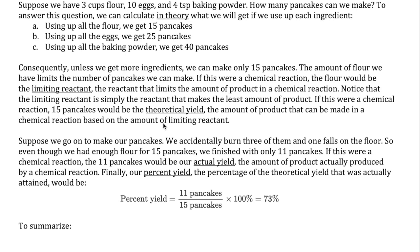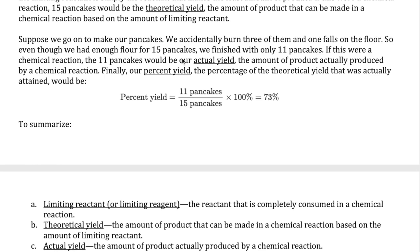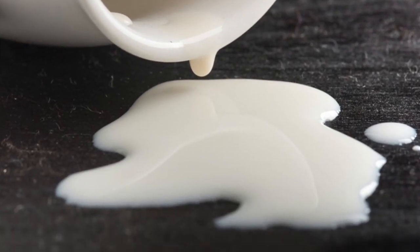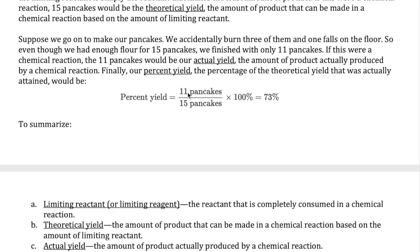Let's say we make the pancake mix but while pouring it on the pancake maker we spill some. We end up making only 11 pancakes instead of the expected 15 due to the spill. The 11 pancakes is what we call our actual yield — what we actually get. We need one more number: how close is the actual yield to the theoretical yield. This is called the percent yield, calculated by taking the actual yield divided by the theoretical yield times 100%. In our example, 11 divided by 15 times 100% gives us 73%.